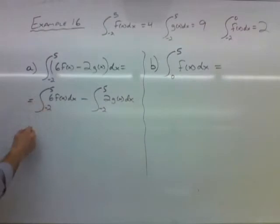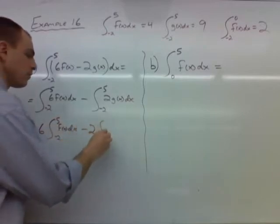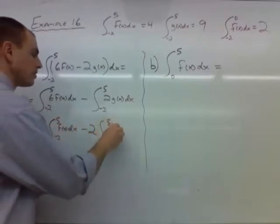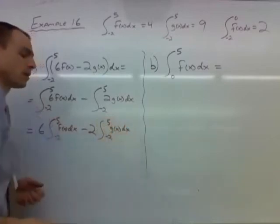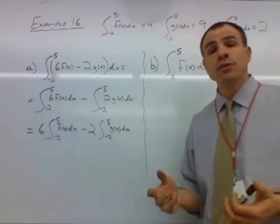We have 6 times the integral from negative 2 to 5 of f(x)dx minus 2 times the integral from negative 2 to 5 of g(x)dx. Now this is important that we've gotten the 6 and the 2 out of there because now we can do some substitution.